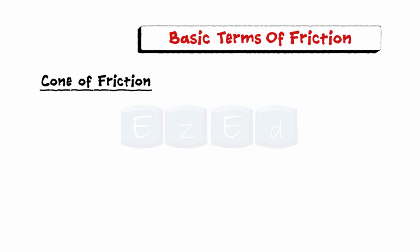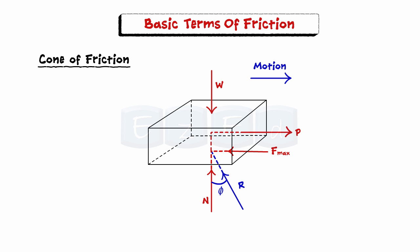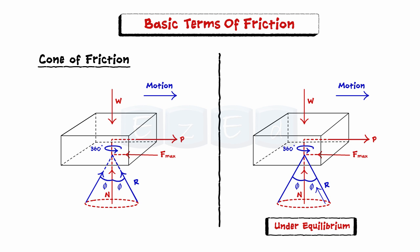Now let us learn about the cone of friction. Consider a block of weight W acted upon by a force P. The block is on the verge of motion. Let R be the resultant reaction of the limiting frictional force F_max and the normal reaction N, acting at the contact surface. The angle of friction is phi. If the direction of the applied force is changed by rotating it through 360 degrees in a plane parallel to the contact surface, the resultant R also rotates and generates a right circular cone of semi-central angle phi. This right circular cone is also called the cone of friction. For a static body under equilibrium, the resultant reaction force at the contact surface always lies within the cone, whereas for a static body on the verge of motion, the reaction force lies on the surface of the cone of friction.